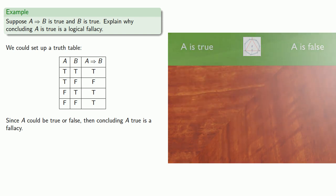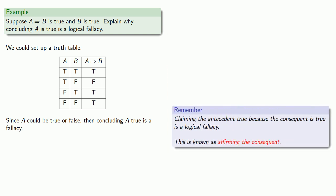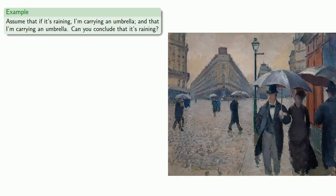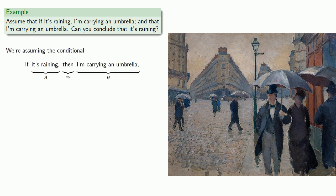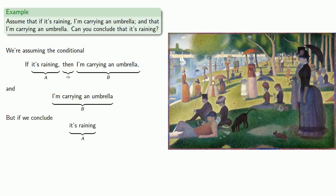This logical fallacy is so common that it has its own name. Claiming the antecedent true because the consequent is true is a logical fallacy known as affirming the consequent. For example, assume that 'if it's raining, I'm carrying an umbrella' and that I'm carrying an umbrella. Can you conclude that it's raining? We're assuming the conditional 'if it's raining, then I'm carrying an umbrella,' and we're also assuming that I'm carrying an umbrella. But if we conclude it's raining, we're affirming the consequent — a logical fallacy.